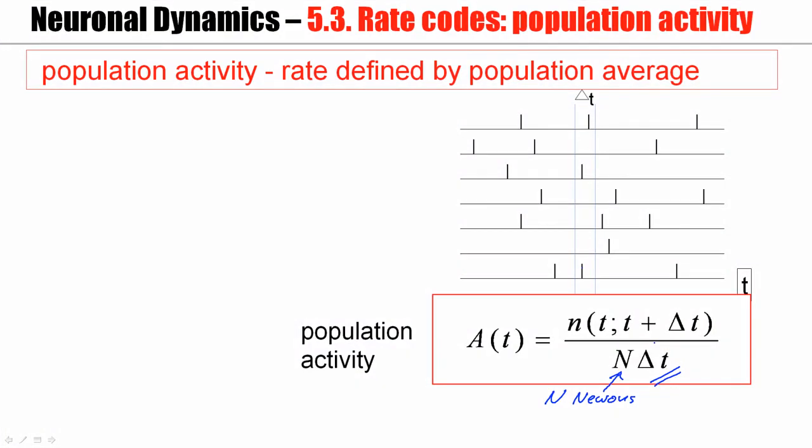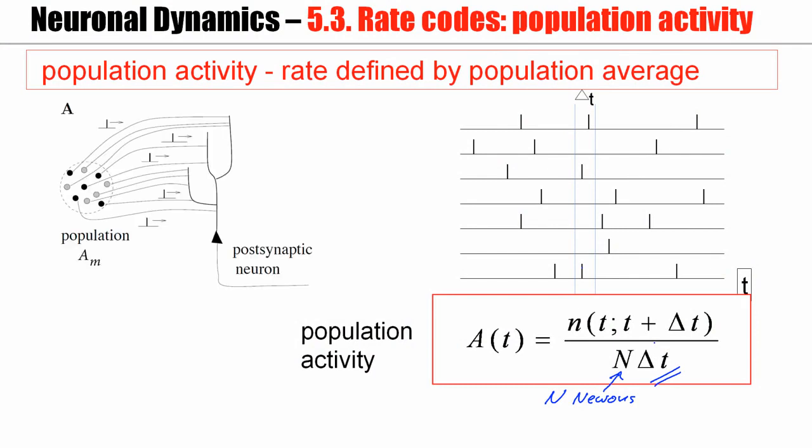Now I would claim that this is a rather natural situation for neurons. Consider a post-synaptic neuron. A post-synaptic neuron receives hundreds of inputs from other neurons. Suppose some of the inputs come from the same population of 500 neurons. So effectively, this neuron would be driven by the population activity, by the population of spikes arriving in each short time interval delta T. So in that sense, this definition of a firing rate, firing rate defined as a population average, is natural.